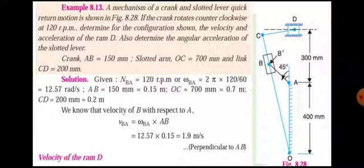Normal slider crank mechanism, 4-bar chain mechanism, Toggle Mechanism, Radial wall gear mechanism — in all these, the problem here is the Coriolis Component of Acceleration. But the specific problem is with the Quick Return Mechanism. This is the crank and slot lever mechanism, and in this mechanism there is a Coriolis Component of Acceleration.